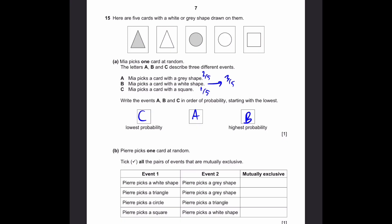B. Pierre picks one card at random. Tick all the pairs of events that are mutually exclusive. So, mutually exclusive events are those two events, any two events that cannot happen at the same time. Either one of them can happen or none of them can happen. But then, both of them cannot happen together. So, Pierre picks a white shape and Pierre picks a grey shape are the two events. Mutually exclusive? Yes. Because if you pick a white shape, it's not going to be grey. So, this event is false. If you pick a grey shape, this is true. But event 1 is going to be false since it's not white color.